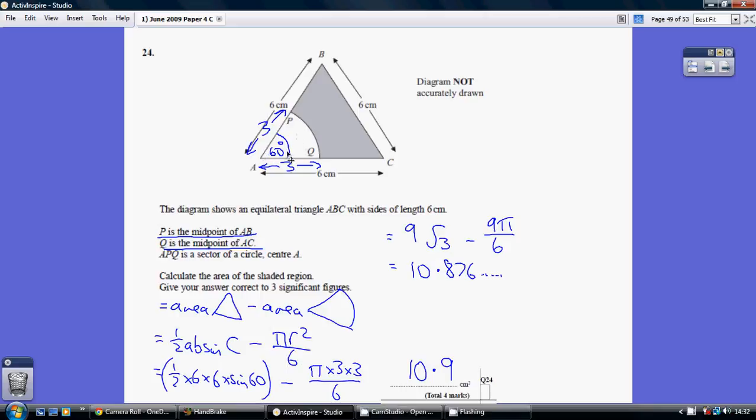So the area of this sector here is πr², the area of a circle, divided by 6. The radius of the circle is 3, because we're told that that's halfway along.